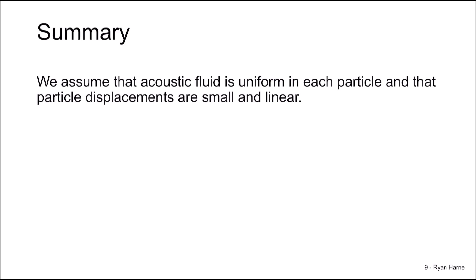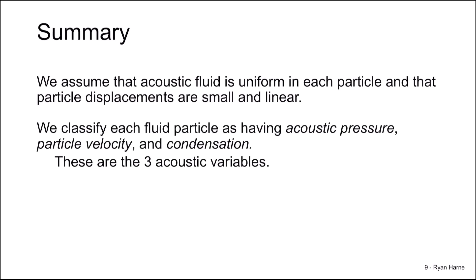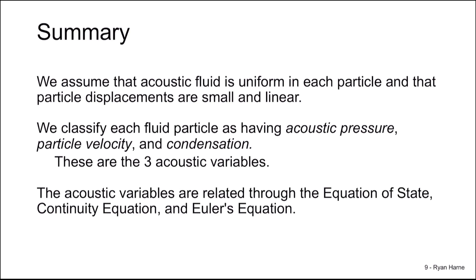Let's summarize what we've learned. We assume the acoustic fluid is uniform throughout each particle and that the particle displacements are very small and linear. We identify acoustic pressure, particle velocity, and condensation, and each fluid particle has these three variables constant throughout. The acoustic variables are related through the equation of state, the continuity equation, and Euler's equation. We'll use this as a foundation throughout this course. In the next video, we'll put all of these together to learn about the acoustic wave equation, which tells us how waves propagate.